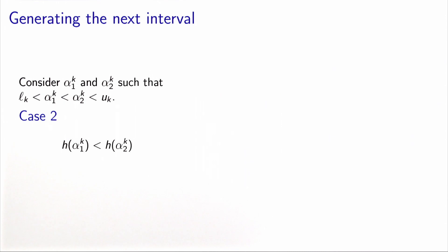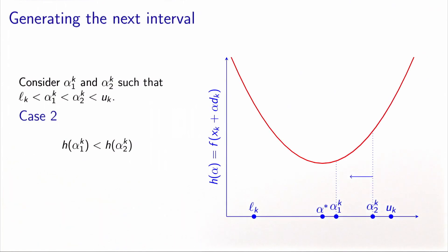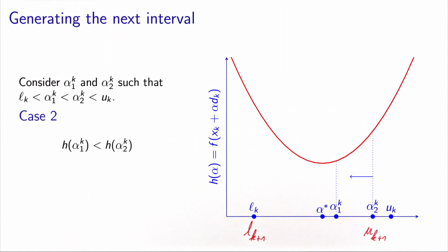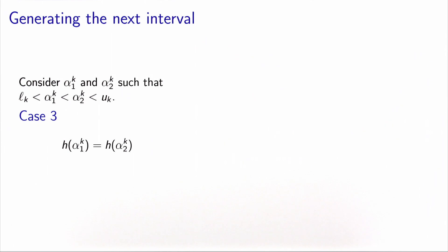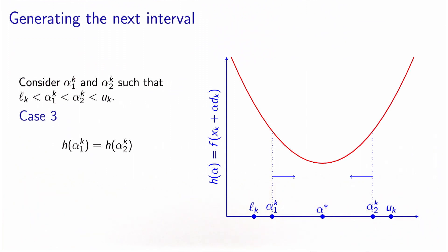The second case is processed in the same way. If the value at alpha 1 is lower than the value at alpha 2, we know that the function is decreasing from alpha 2 going left to alpha 1, so alpha star is on the left part of alpha 2. Therefore, alpha 2 becomes the new upper bound, and the lower bound does not change. The new interval is Lk to alpha 2k.